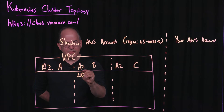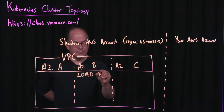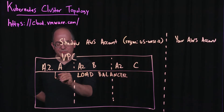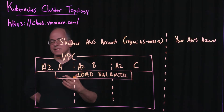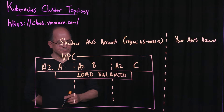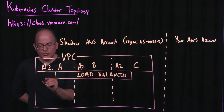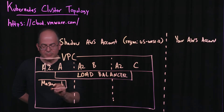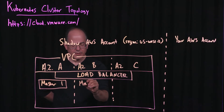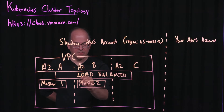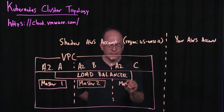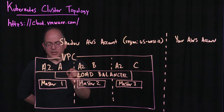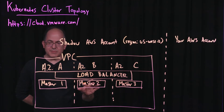I'm going to put a load balancer in front of the cluster. This load balancer will span the three availability zones and will provide access to all of the necessary machines within the cluster. Behind this load balancer, we're going to make three Kubernetes masters — master one in availability zone A, master two in availability zone B, and master three in availability zone C. These masters are running on private networks and are not directly accessible for security reasons.